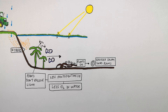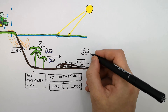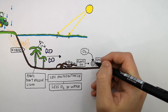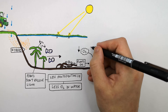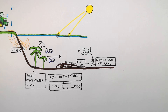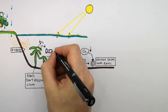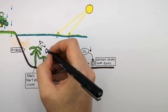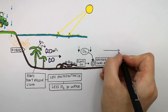The decomposers use the dead plant material as an energy source for respiration, and they use oxygen that is dissolved in the water for respiration. This further decreases the oxygen levels in the water. If oxygen levels decrease below a certain point, the fish won't be able to survive because they need oxygen dissolved in the water to survive.